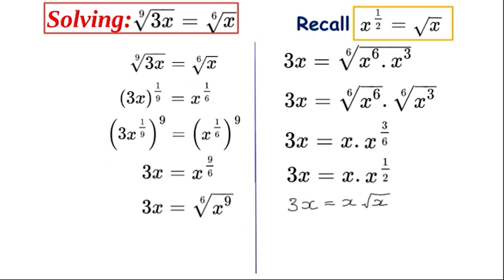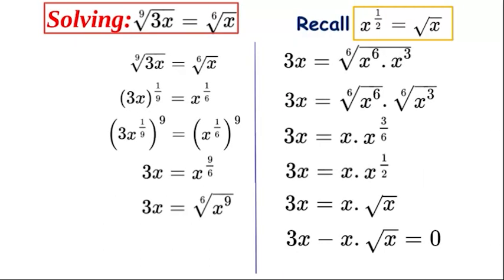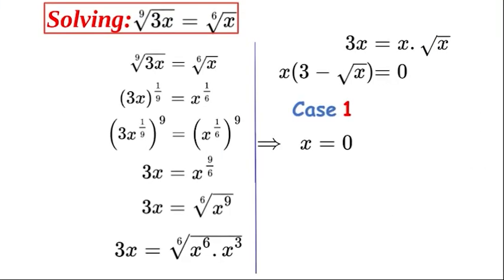So now we're making real progress. We have 3x is equal to x square root x. Now let's start solving. So we have it written out here, and we're going to bring it all over to one side and now we're going to factor out the x and solve.